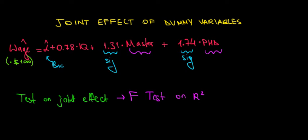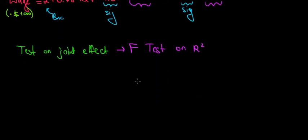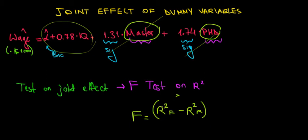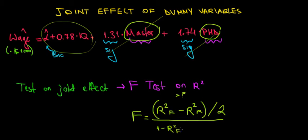How do we compute this F test on R-squared? The F test compares the difference between the R-squared of the full model relative to the R-squared of the restricted model. The full model is the regression where we include the dummies, and its R-squared is higher than that of the restricted model, which by definition does not include those dummy variables. To know whether the increase is significant, we normalize it by the number of additional variables we add — in this case, two additional variables. We then divide this by one minus the R-squared of the full model, divided by the remaining degrees of freedom.